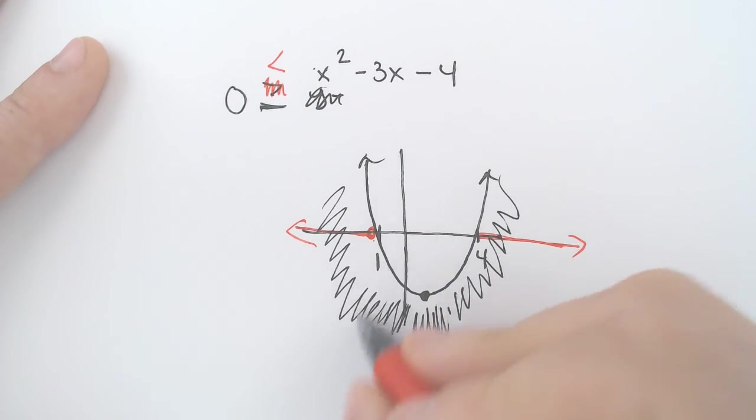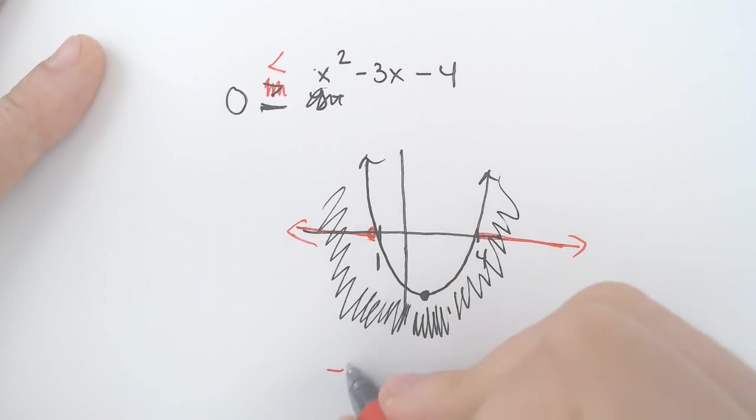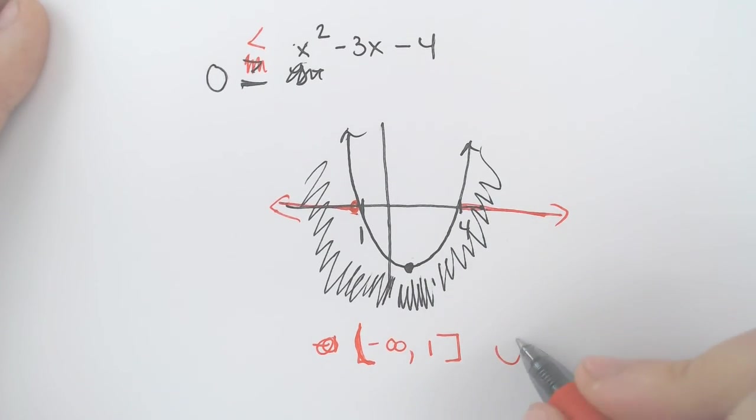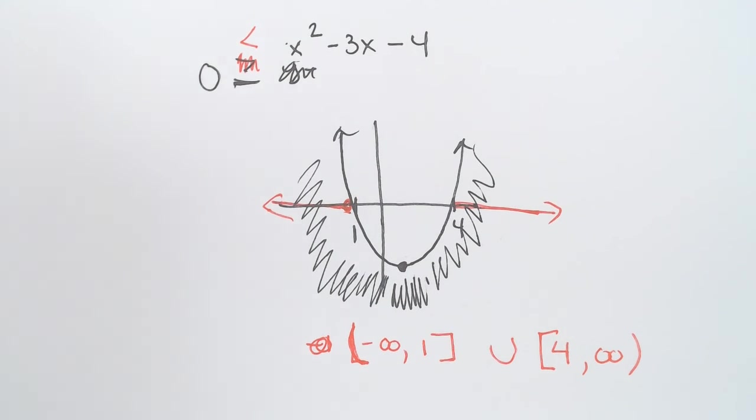And that means that your actual solution on the number line would relate to the 1 and the 4. And it would be before the 1, so negative 1, negative infinity to 1, bracket because it includes it, parentheses around infinity because it can't include it, and from 4, bracket around the 4, to positive infinity.